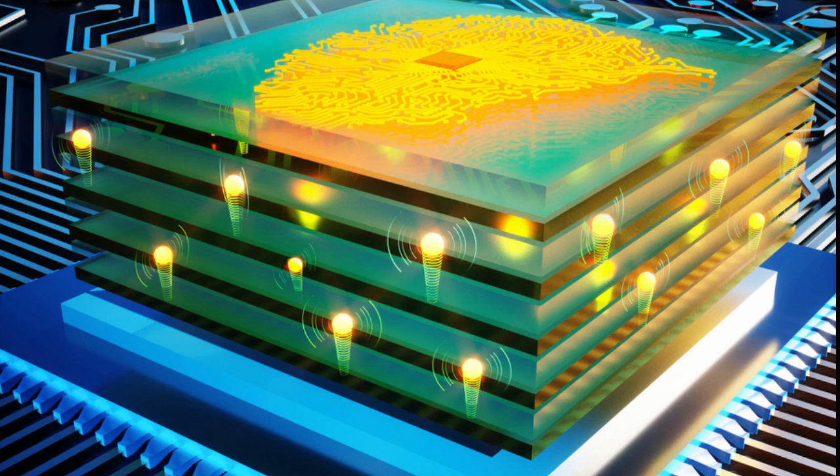It can also withstand very strong pulsed electric fields. This is critical because applying more voltage to the device enables protons to move at blinding speeds. Because the protons don't damage the material, the resistor can run for millions of cycles without breaking down.